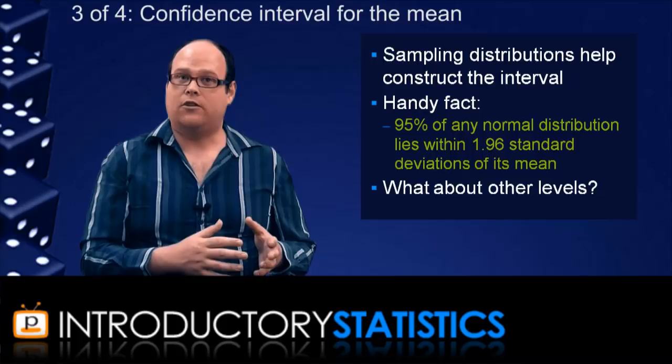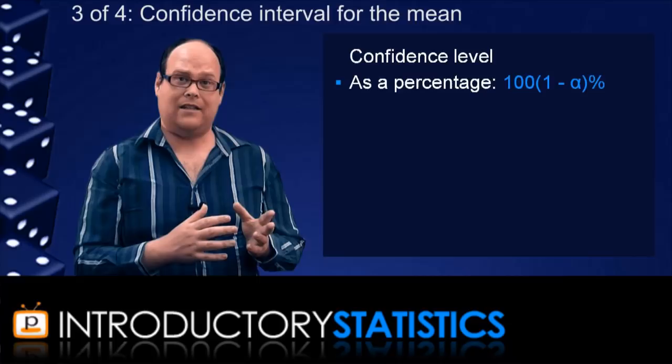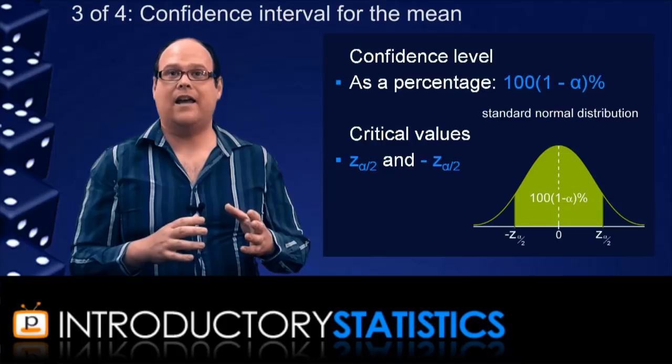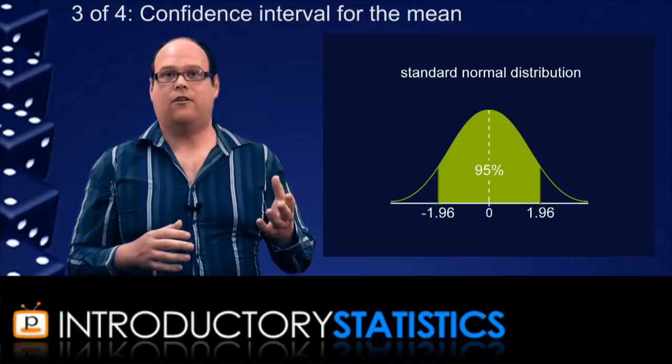If we express the level of confidence like this, then there are two values known as critical values, denoted by z sub alpha on 2 and minus z sub alpha on 2. And these two values are actually z scores from the distribution z, and they contain the percentage level of confidence in z, whatever that level is.